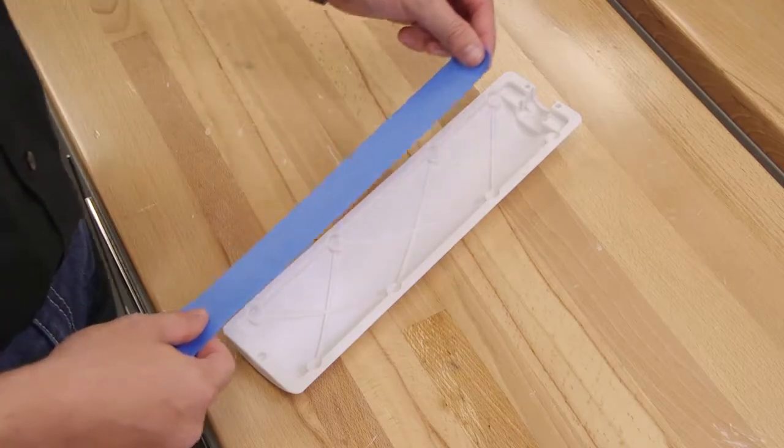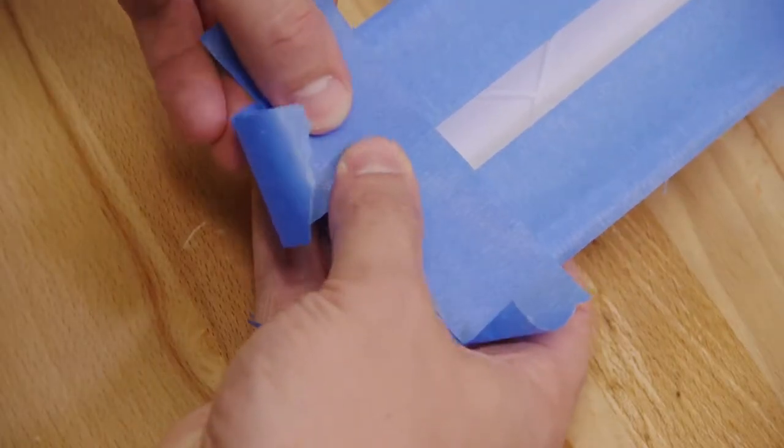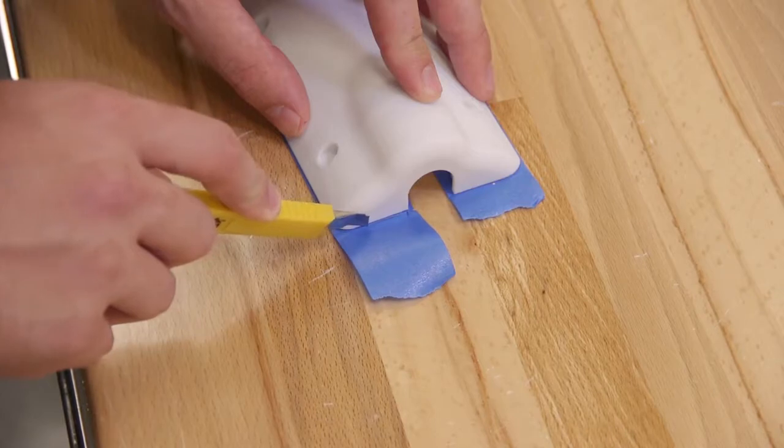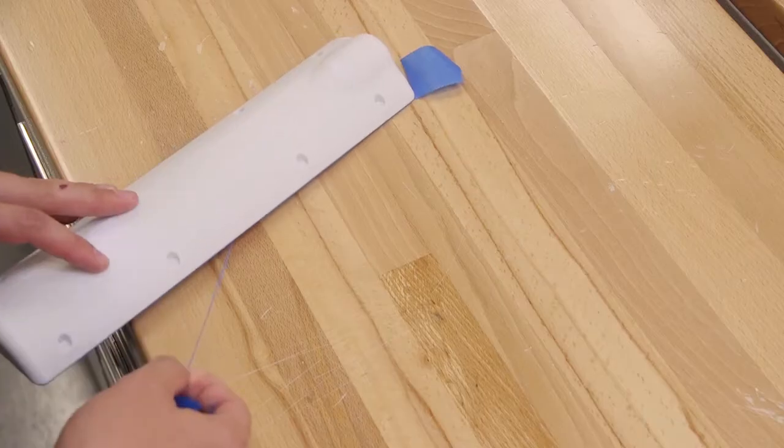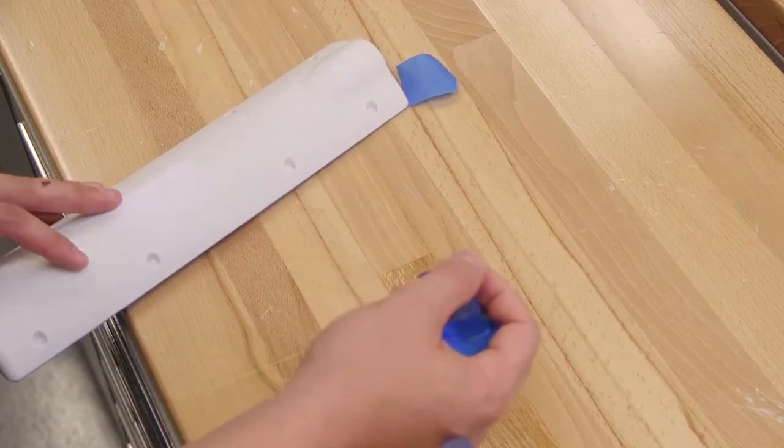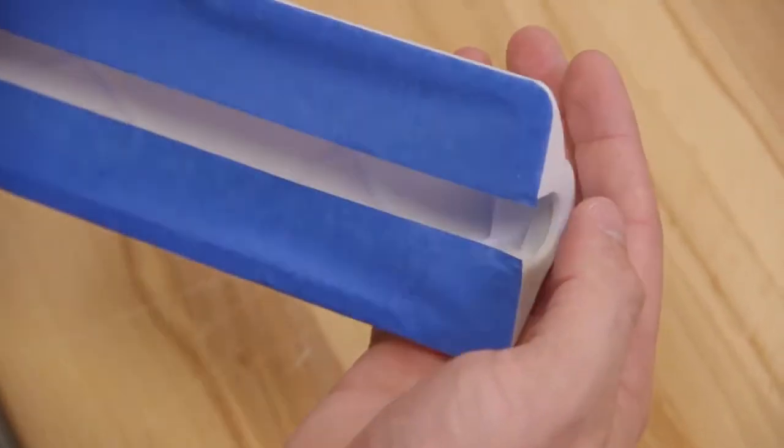First prepare the part. Mask the areas of the part where a media blasted surface is undesirable. Masked areas may include parting surfaces of tools or sharp outside corners that could be rounded by media blasting.